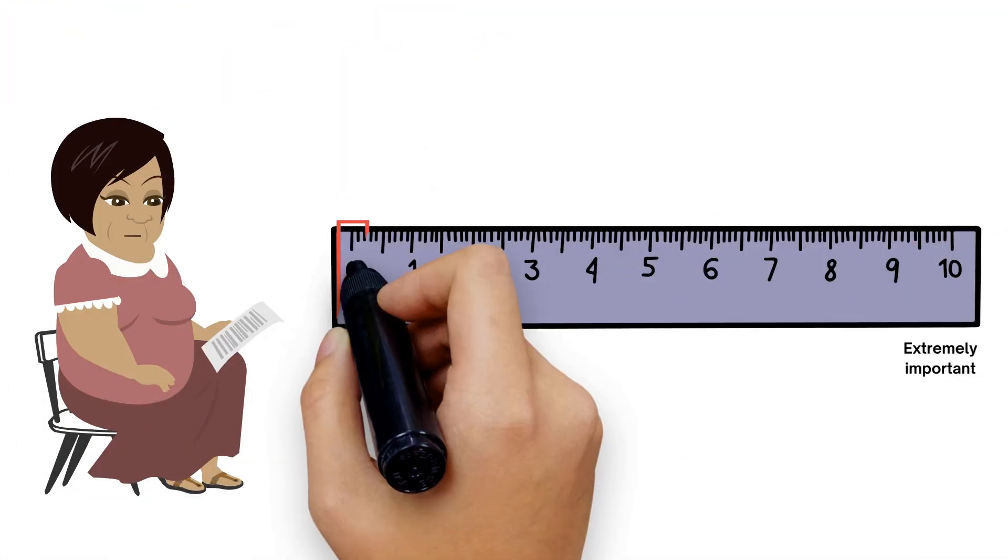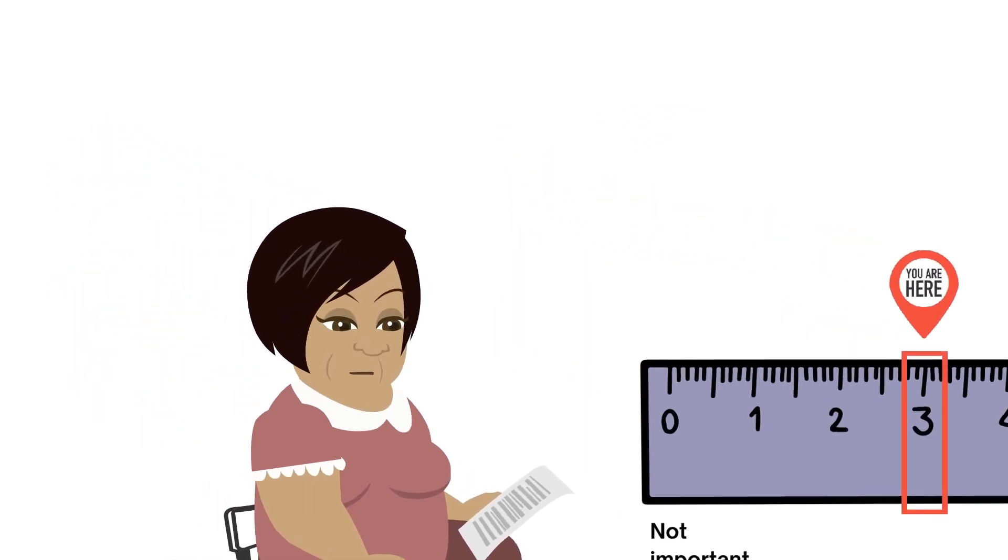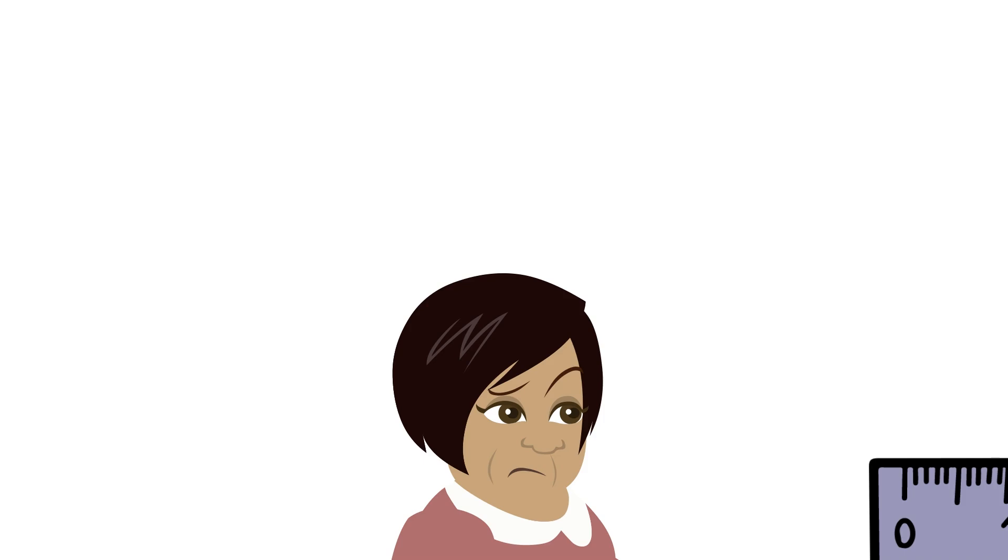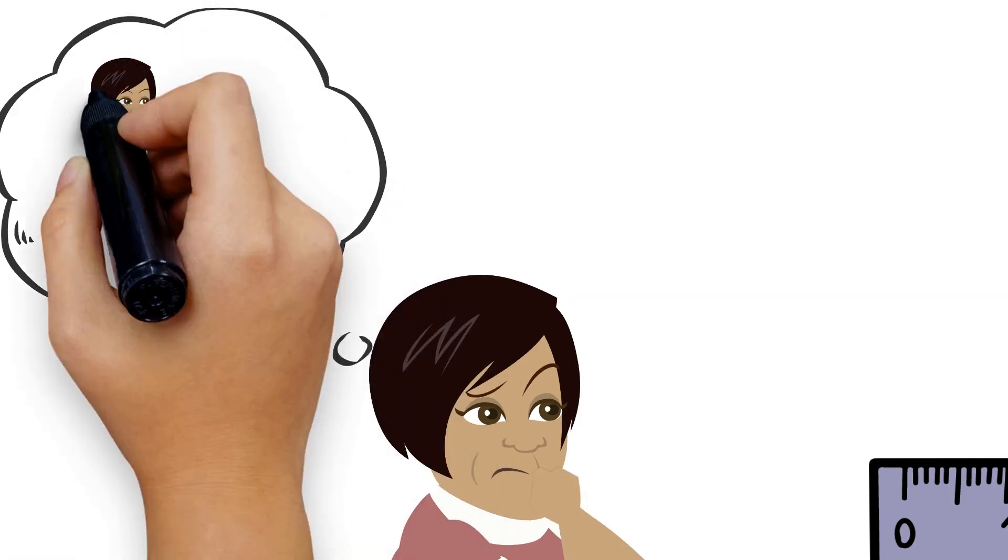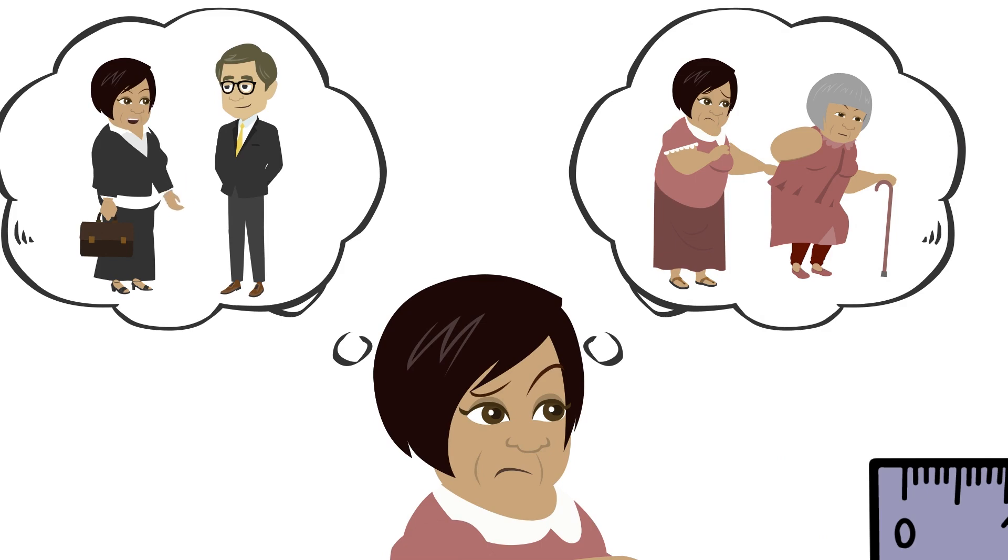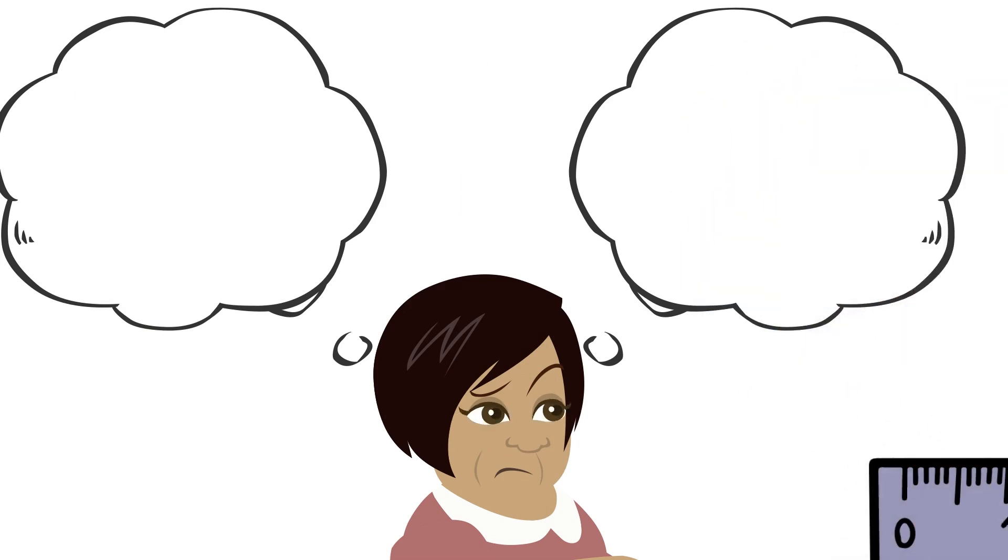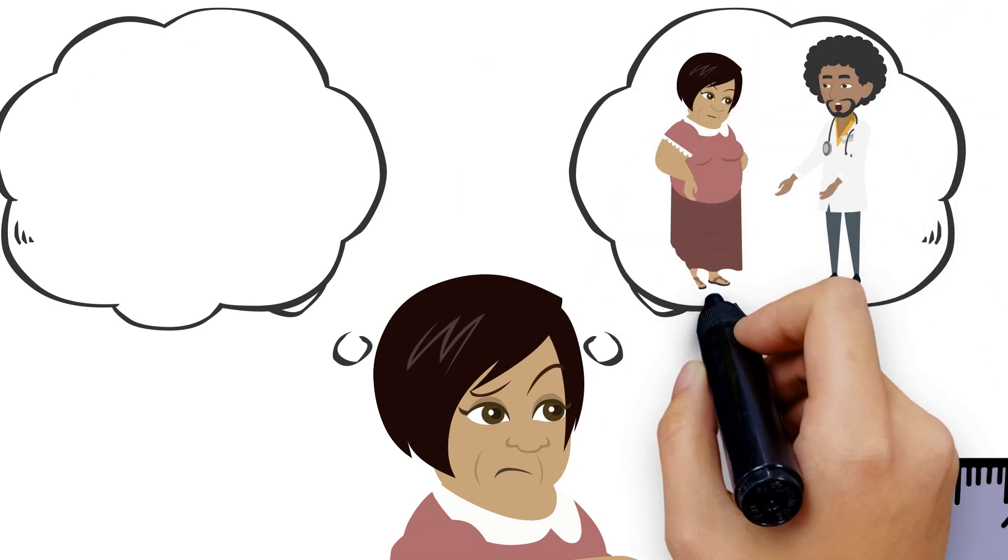Mila rated her level of importance for quitting at a 3. She does want to quit but is juggling different responsibilities like applying for a new job and taking her mom to her doctor's appointments. After taking a moment to reflect, Mila decides that she needs to prioritize quitting vaping because she hasn't been feeling well and needs to stay healthy for her mom.